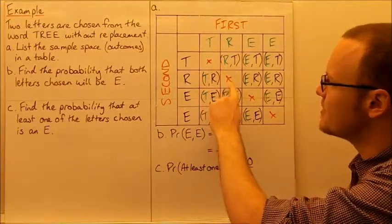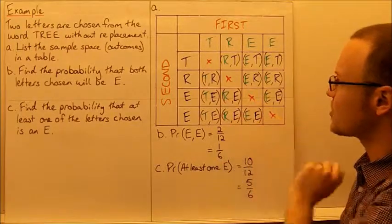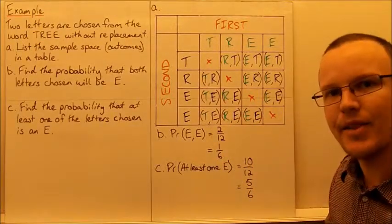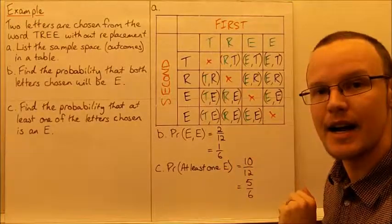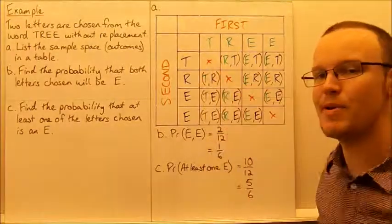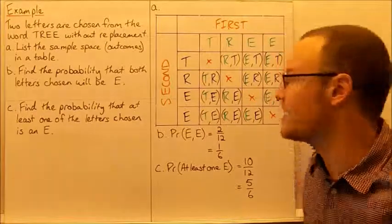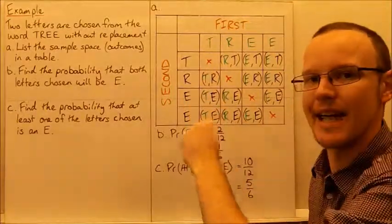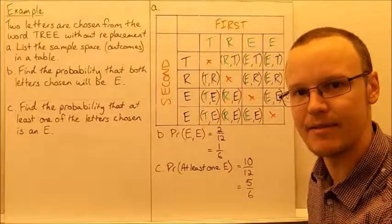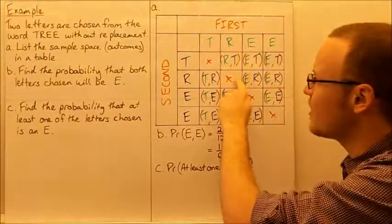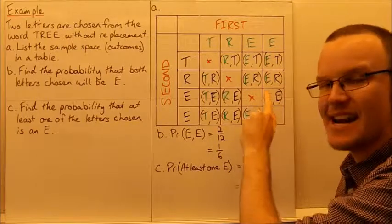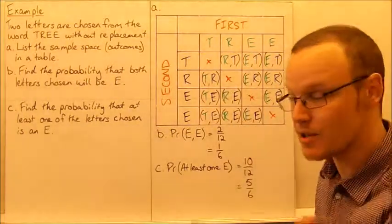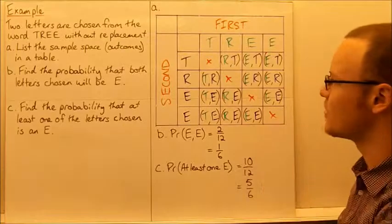I've put X's on the squares that mean we're doing it without replacement. If I choose the T the first time, it's been removed and not replaced, so I can't choose T again. I can't go T-T. Similarly, I won't be able to go R-R, and I'm not going to be able to go E and then pick the same E out because I've already removed it.